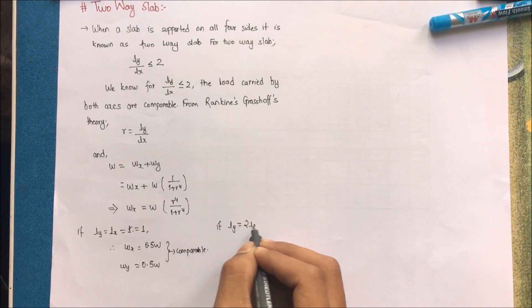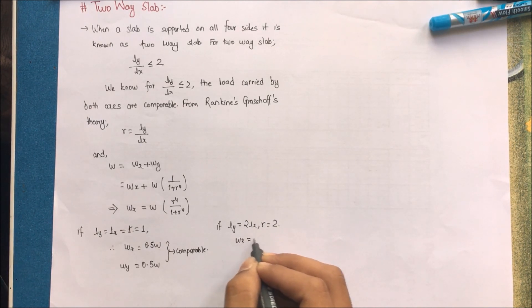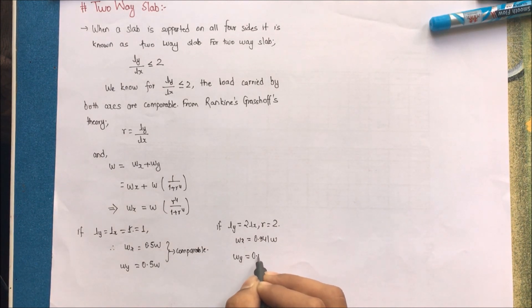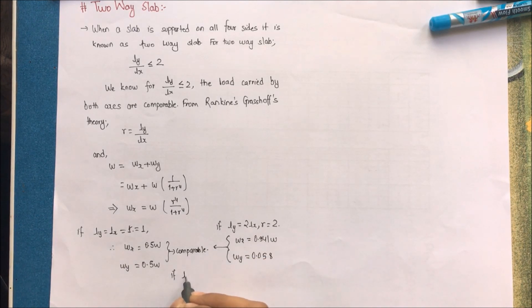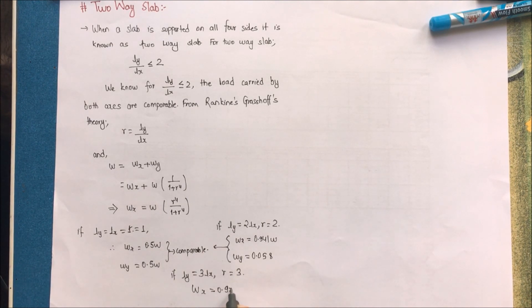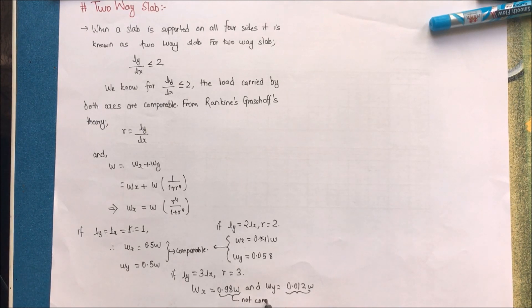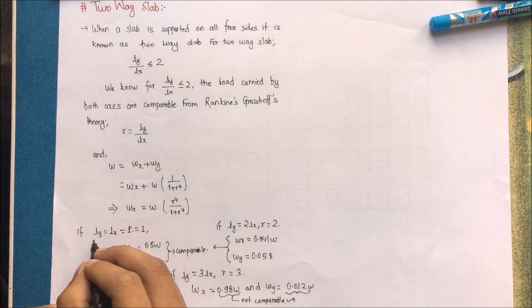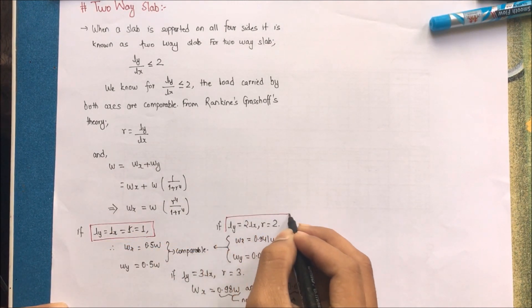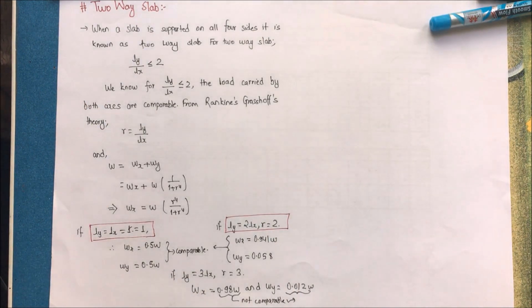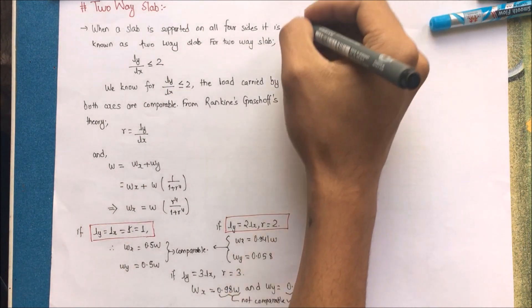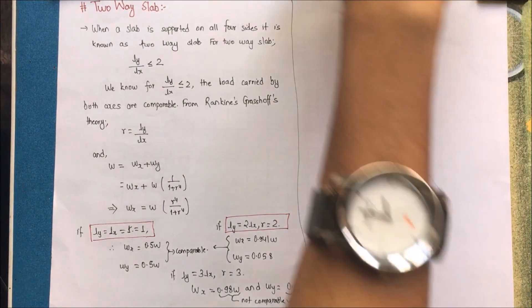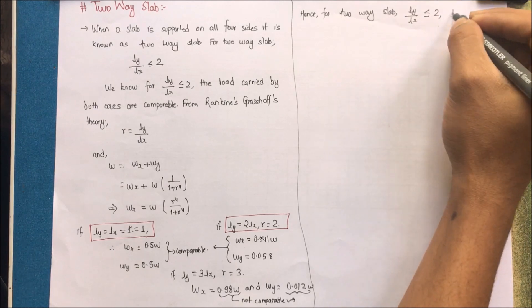If ly equals 2·lx, then r equals 2, giving wx = 0.941w and wy = 0.058w — which is somehow comparable. If we increase ly to 3·lx, then r equals 3, giving wx = 0.98w and wy = 0.012w — which is not comparable, because 98% of the weight is distributed along the x-axis and only 1.2% along y. So a two-way slab is only valid when load distribution along both axes is comparable, and hence reinforcement must be provided in both axes.